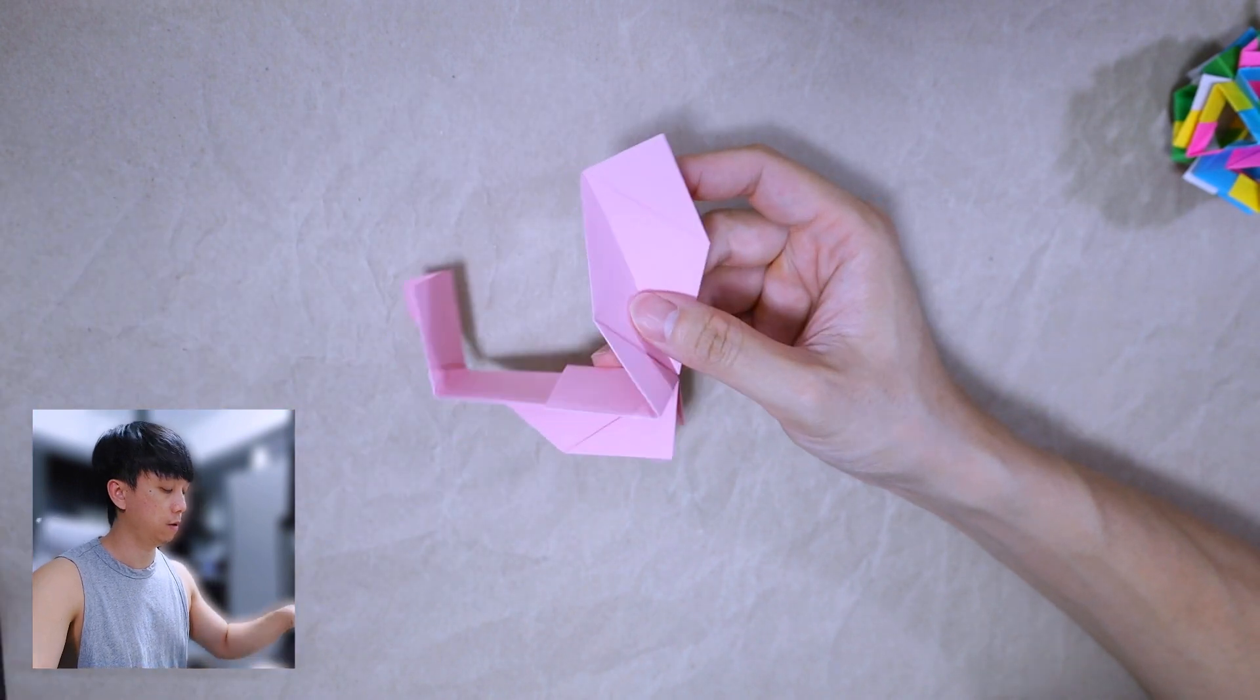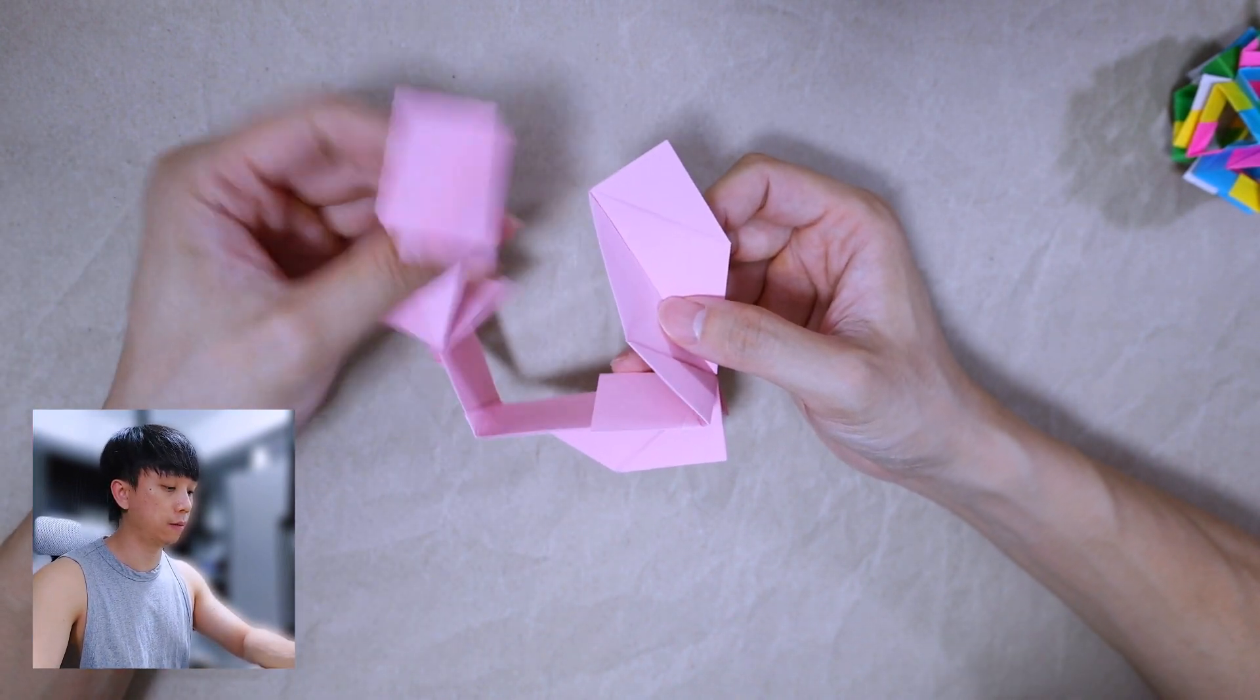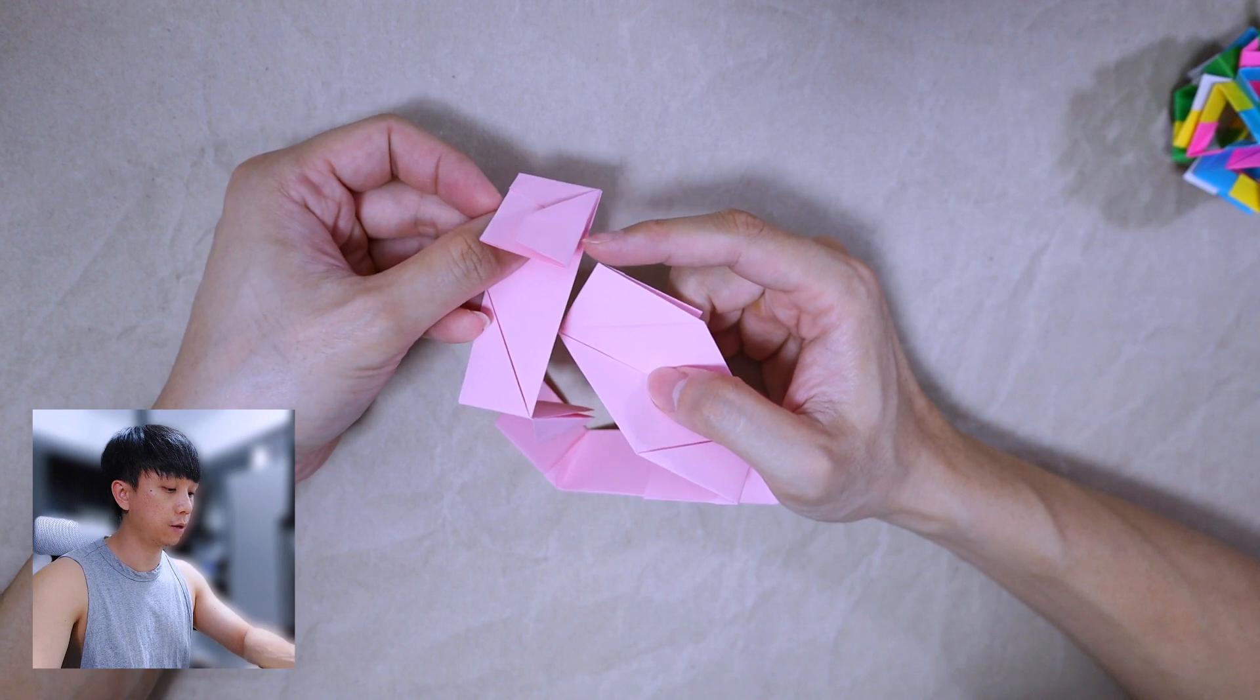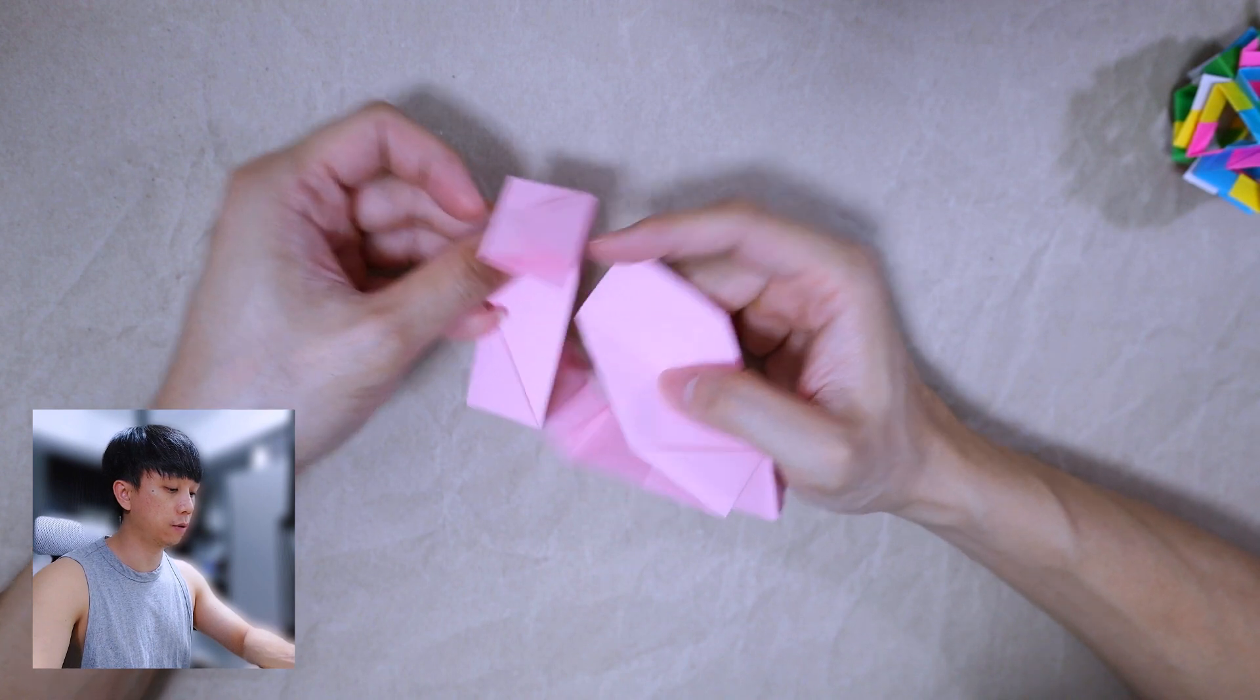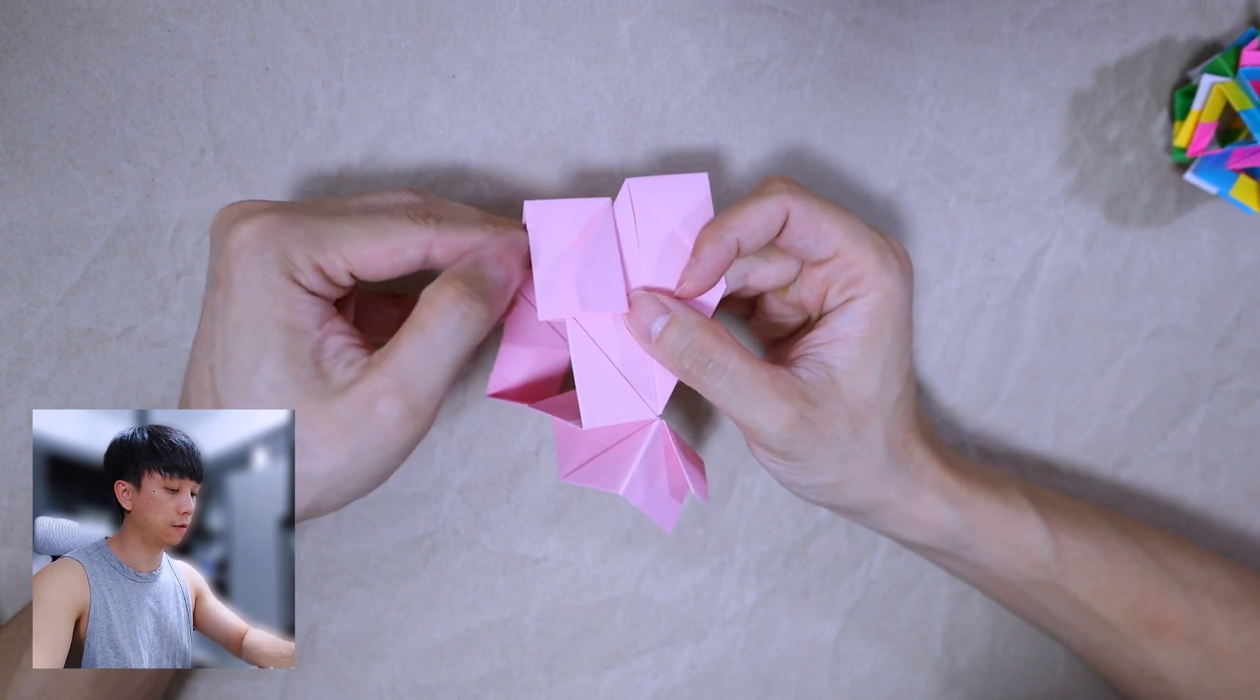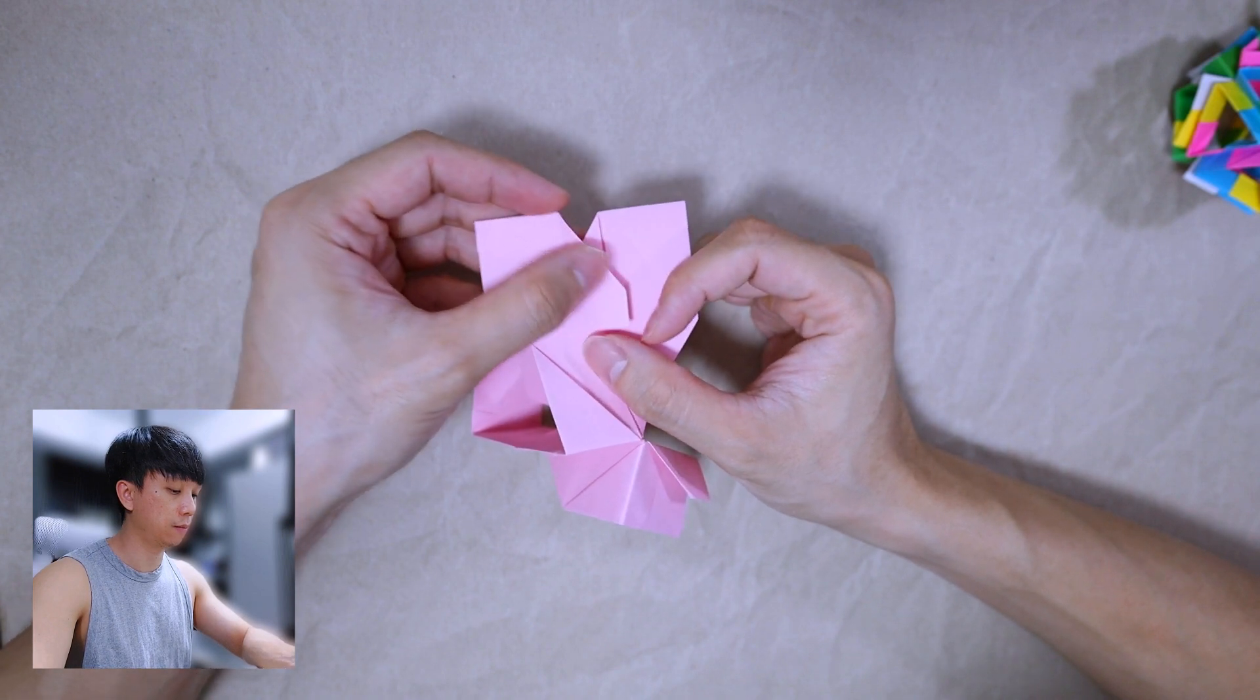There's one. Take another one, repeat the same. Take this part here, there's a pocket, insert it like this. And this flap inserts to the pocket.